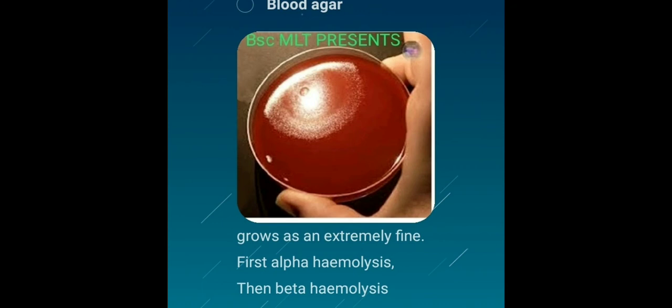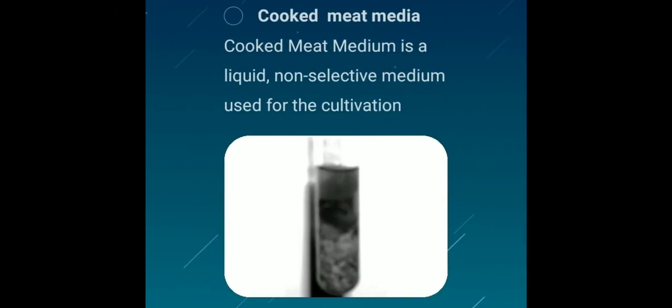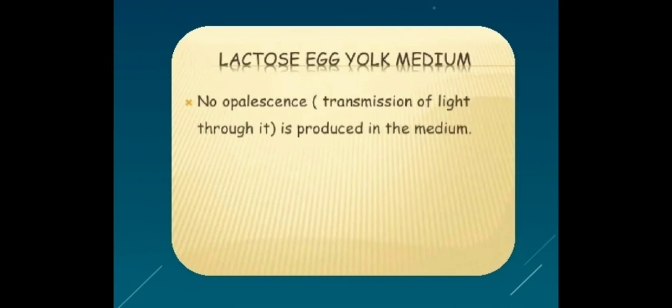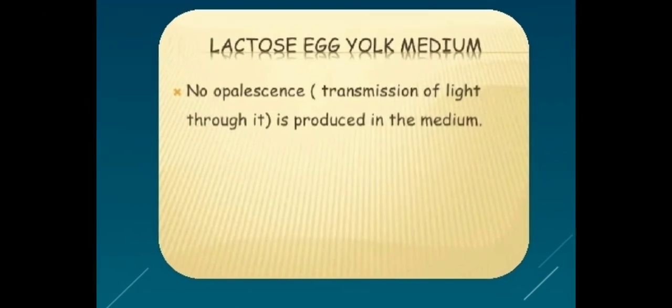On cooked meat media, the media after incubation becomes turbid with gas formation. The meat is not digested but turns black during prolonged incubation. On lactose yolk media, no opalescence is produced.